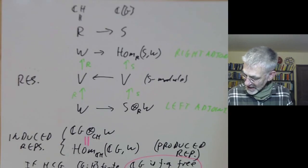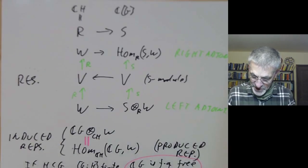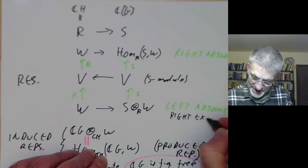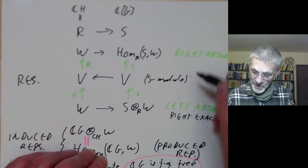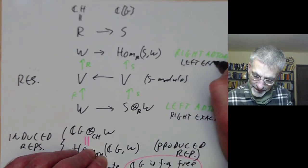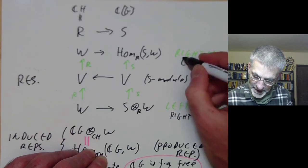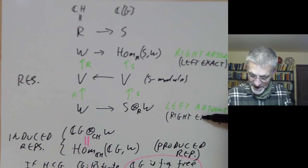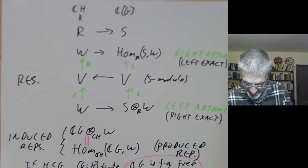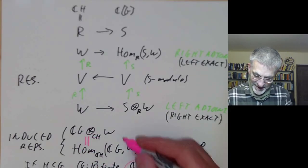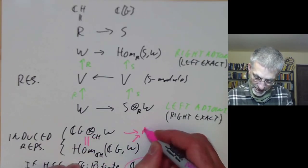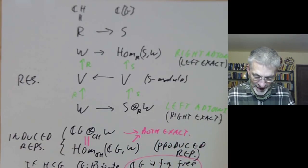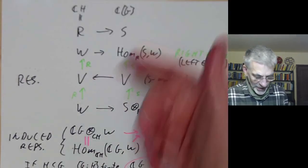Furthermore, this behaves particularly well because left adjoints are always right-exact and right adjoints are always left-exact. So if the right adjoint equals the left adjoint, then it's both right- and left-exact, hence exact — meaning it preserves exact sequences. So for finite groups we don't need to worry about this ambiguity.